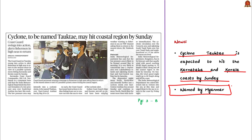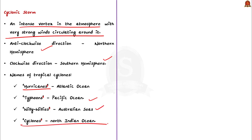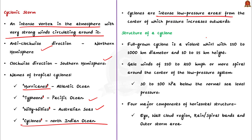Today let's discuss the formation, structure, severity, and grading of cyclones — a very important topic in geography. A cyclonic storm is an intense vortex in the atmosphere with very strong winds circulating in an anti-clockwise direction in the northern hemisphere and clockwise in the southern hemisphere, due to the Coriolis force. Tropical cyclones are referred to as hurricanes over the Atlantic Ocean, typhoons over the Pacific Ocean, willy-willies over the Australian Sea, and simply as cyclones over the North Indian Ocean. Cyclones are intense low pressure areas from the center of which pressure increases outwards.